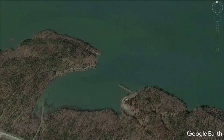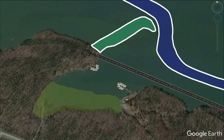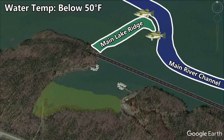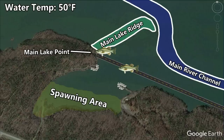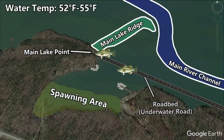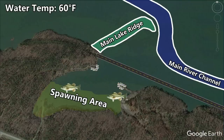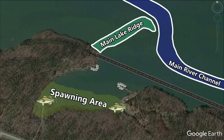In general terms, bass will stop at the most obvious pieces of structure and cover between their main lake areas and their spawning areas. So in this example from one of my favorite pre-spawn areas on Lake Maumelle in Arkansas, bass will start in their winter areas like a main lake ridge that drops off into the main river channel. Once the water gets around 50 degrees they'll start moving towards the spawning pocket and stop on either the main lake point or a submerged road that was there before the lake was flooded. Then as water temperatures reach 52 to 55 degrees they'll set up on rocky secondary points, and finally as water temperatures reach 60 degrees they'll work their way all the way back into the spawning areas.